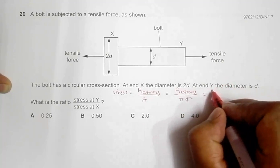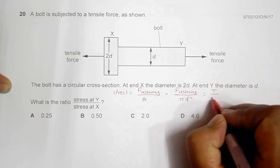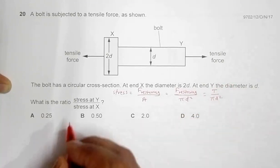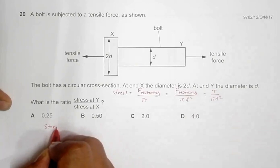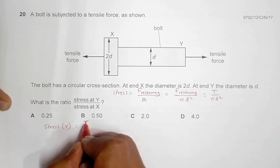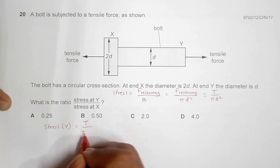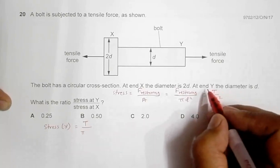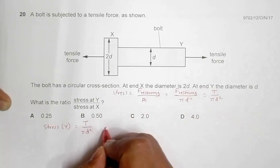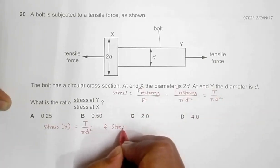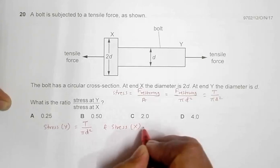So we will have the stress at Y. Stress at Y should be equal to T by pi by the diameter at end Y, which is d, so it is d squared. And stress at X equals T the same, and we have pi, then the diameter is 2d, so it is 2d squared.